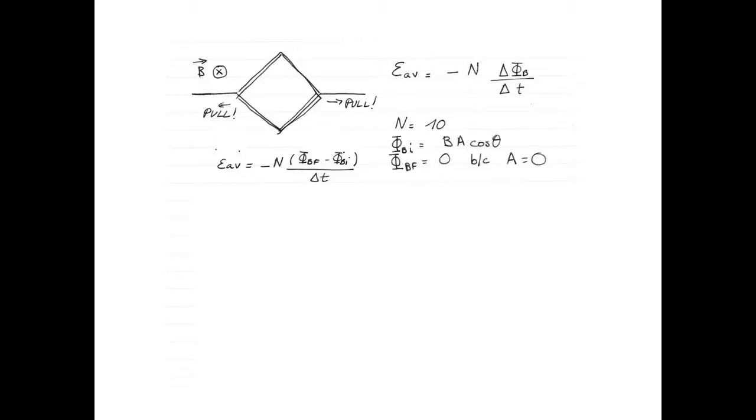Therefore, the angle between the magnetic field and the area vector will be 0. Cos of 0 is 1, so our initial magnetic flux will just be B times A.